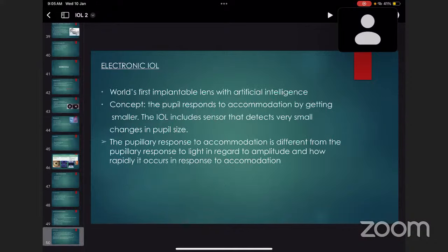Third is electronic IOL, world's first implantable lens with artificial intelligence. The concept is the pupil responds to accommodation by getting smaller. The IOL includes sensor that detects very small changes in pupil size. The pupillary response to accommodation is different from pupillary response to light in regard to amplitude and how rapidly it works in response to accommodation.